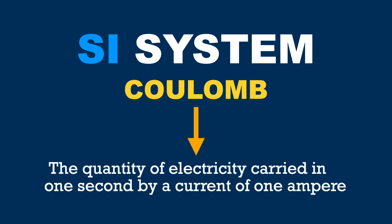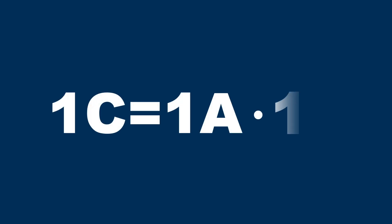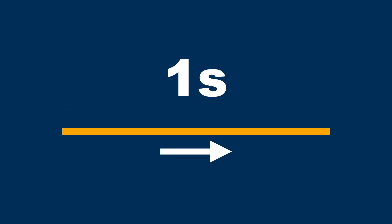In math terms, that means one coulomb equals one ampere times one second. So in conclusion, if a current of one ampere flows for one second, it moves one coulomb of charge.